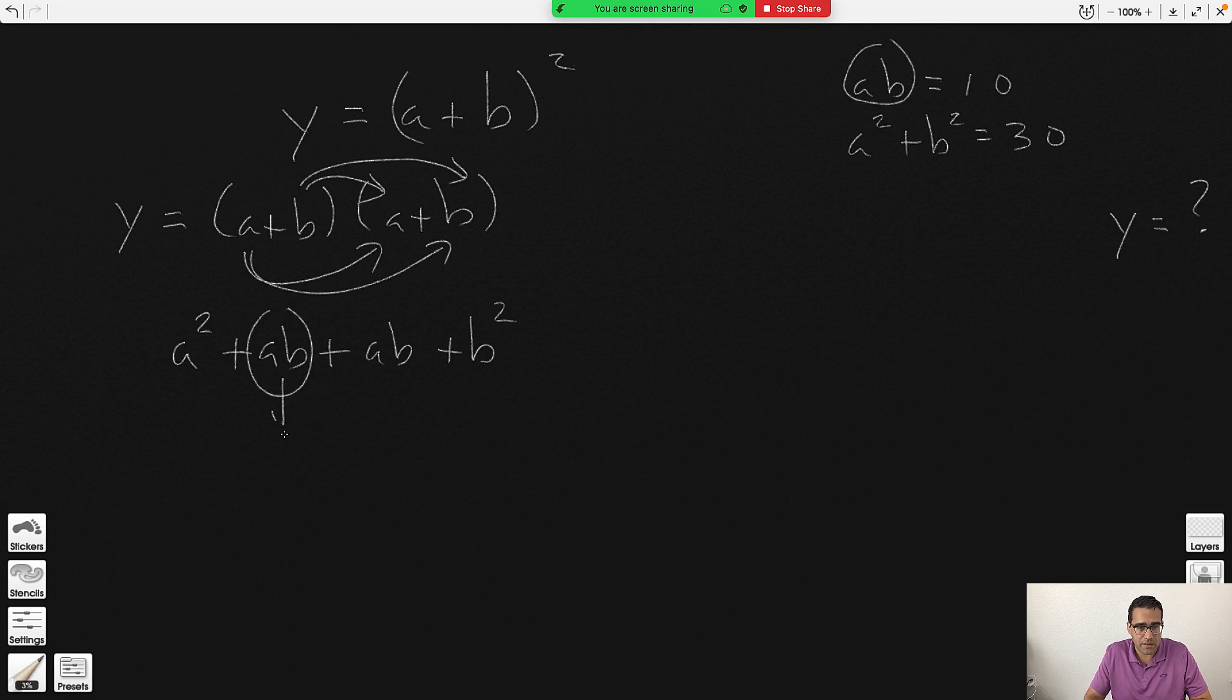Now if you notice, you have something here: this is ab, this is ab, and you said that ab is 10. Okay, remember all of this is y, because this is y, so we can lower the y here. Now you have another ab, another 10, right? Because ab is 10.